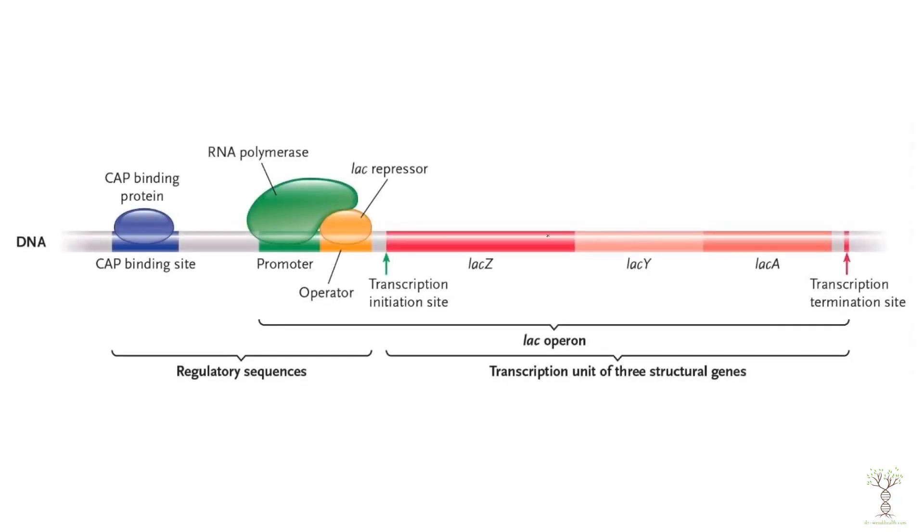In bacteria, genes are grouped together in what we call operons — a few genes sharing one single promoter. When RNA polymerase binds to that promoter, all three genes are transcribed together. In our eukaryotic cells we don't have operons; every gene has its own promoter. In this diagram we can see the lac operon, where bacteria have three genes called lac Z, lac Y, and lac A — lac standing for lactose.